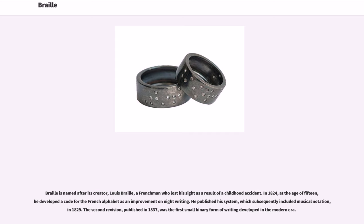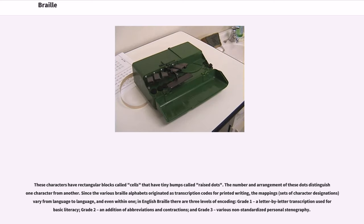The second revision, published in 1837, was the first small binary form of writing developed in the modern era. These characters have rectangular blocks called cells that have tiny bumps called raised dots. The number and arrangement of these dots distinguish one character from another.